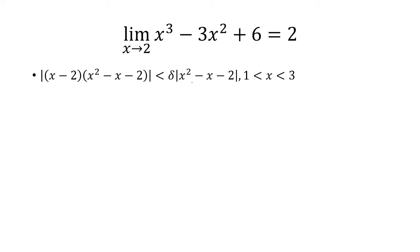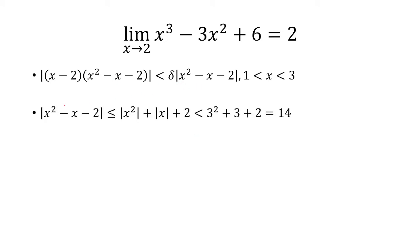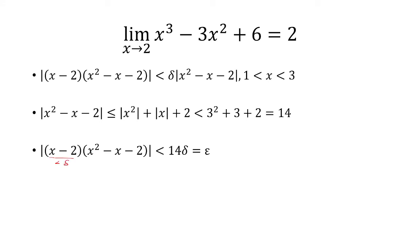Using the triangle inequality, the absolute value of x squared minus x minus 2 is less than or equal to the absolute value of x squared plus the absolute value of x plus 2 — essentially taking the absolute value of each term and making it positive. Since x is between 1 and 3, we plug in 3 to get the biggest value: 3 squared plus 3 plus 2 equals 14. So this expression is less than 14.